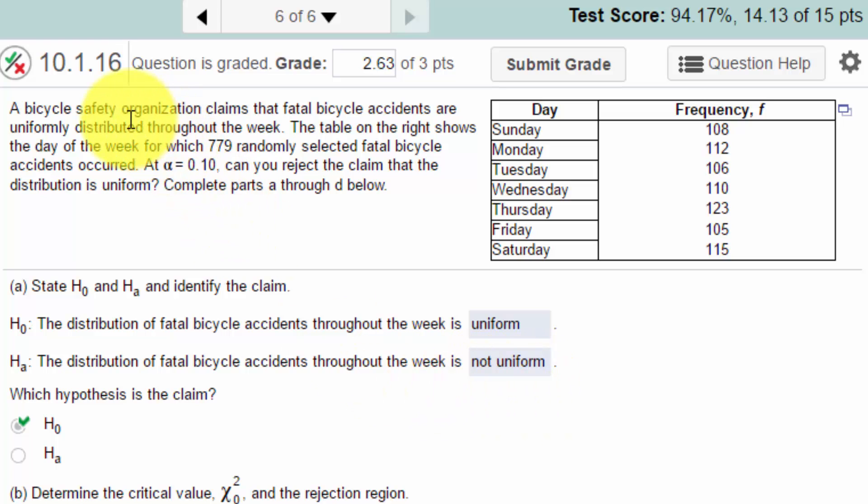And the organization claimed that the distribution was uniform, so therefore that makes the null the claim. The first thing we need to do is determine the critical value of Chi-Square.